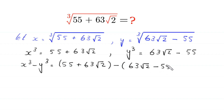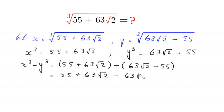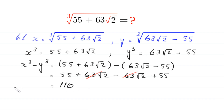Removing the brackets: 55 + 63√2 − 63√2 + 55. The 63√2 terms cancel, leaving 55 + 55 = 110. So x³ − y³ = 110. We call this Equation 1.